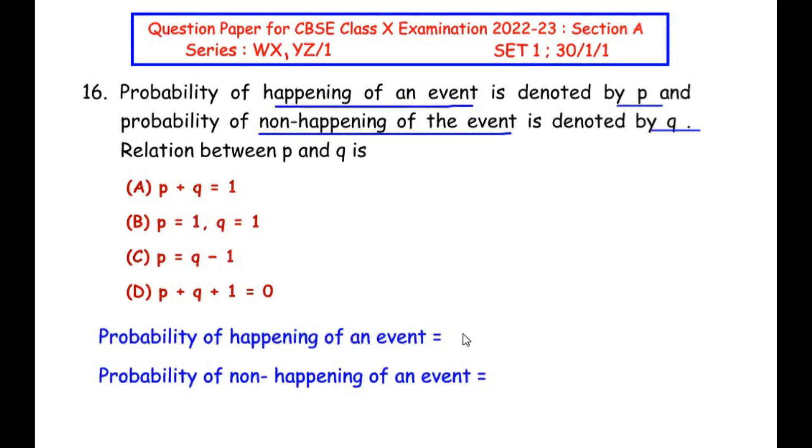So the probability of happening of an event is given as p, and the probability of non-happening of an event is given as q. The one is a positive statement and the second one is a complementary statement of the previous one.